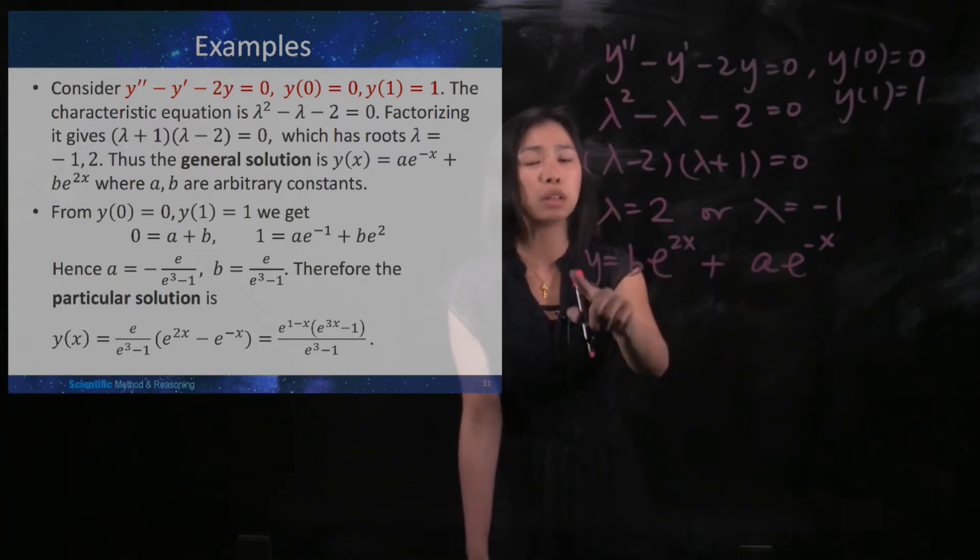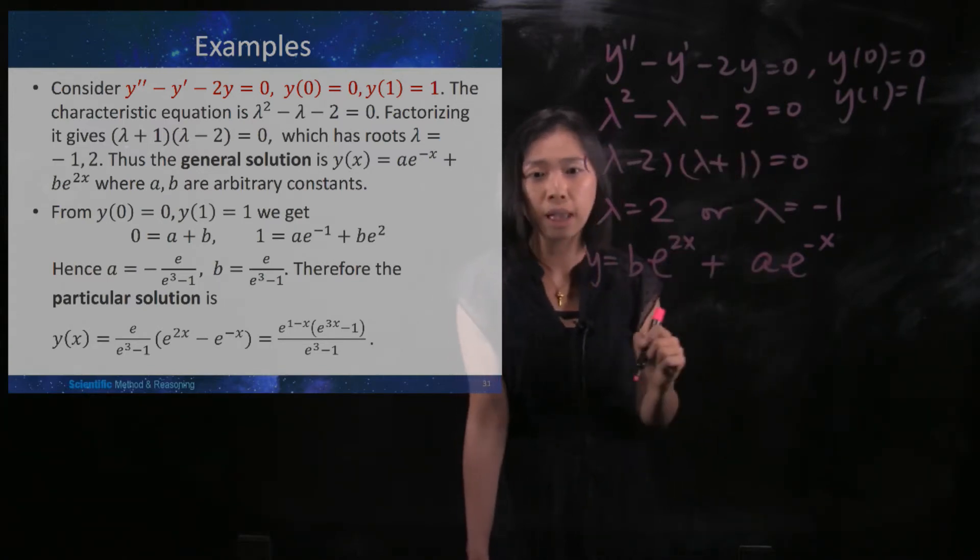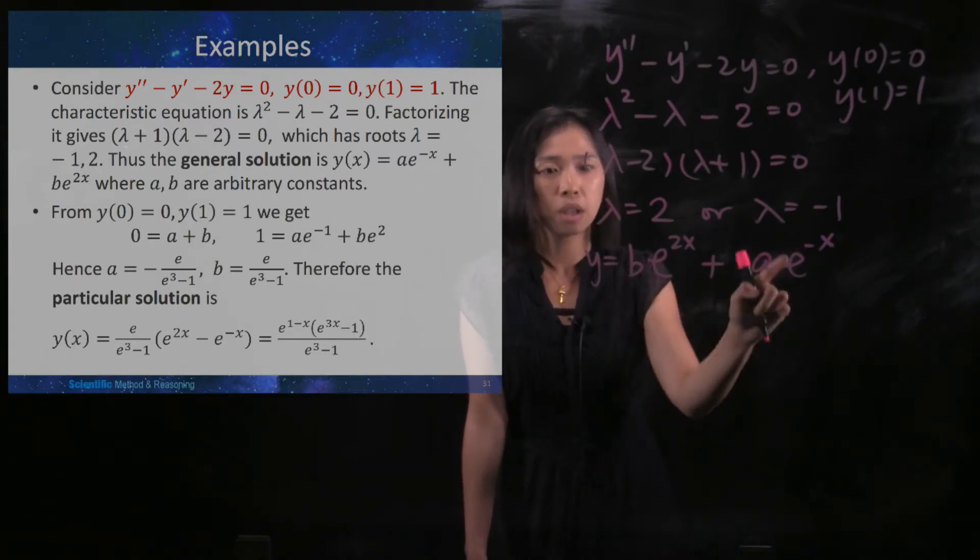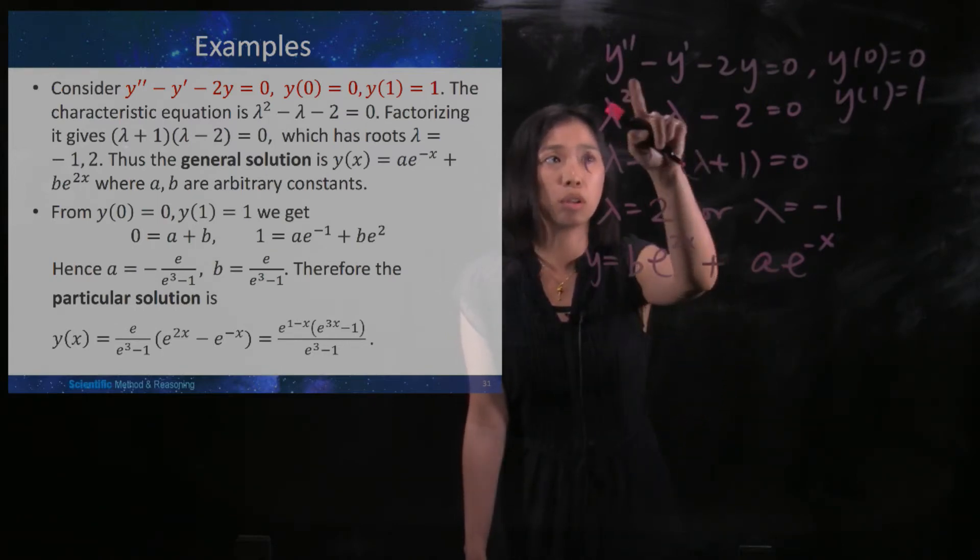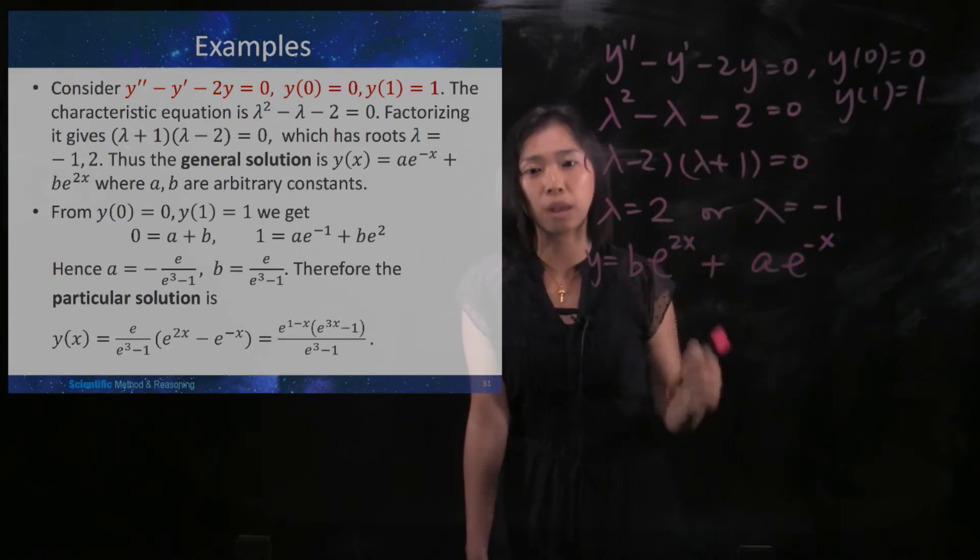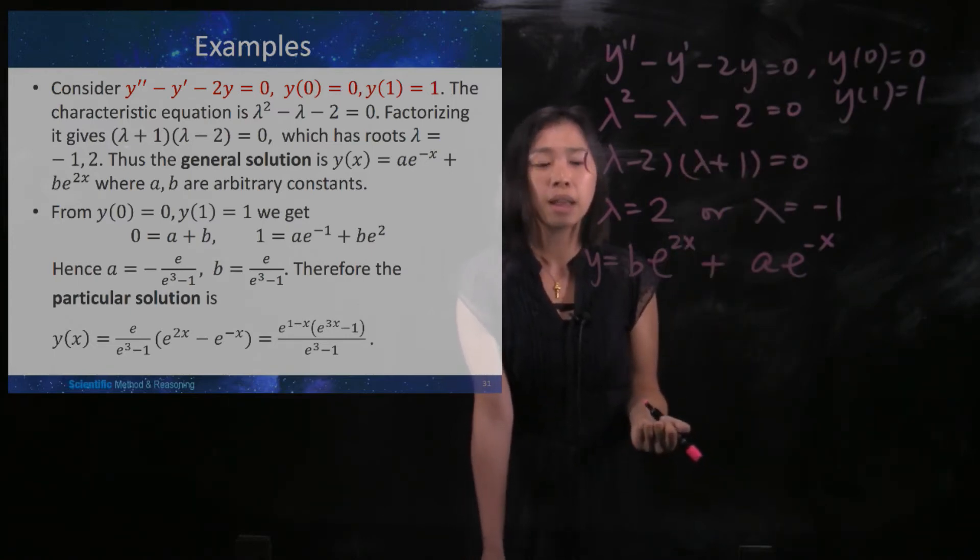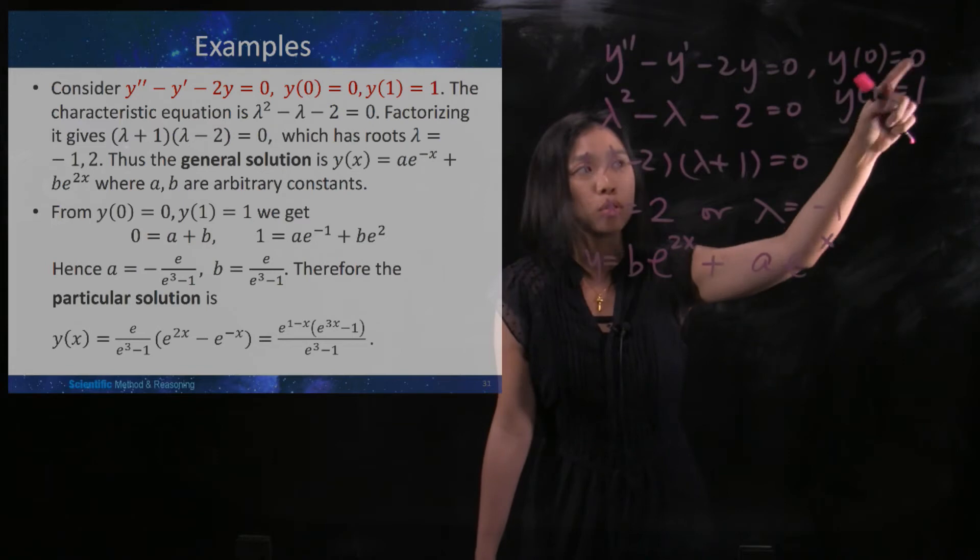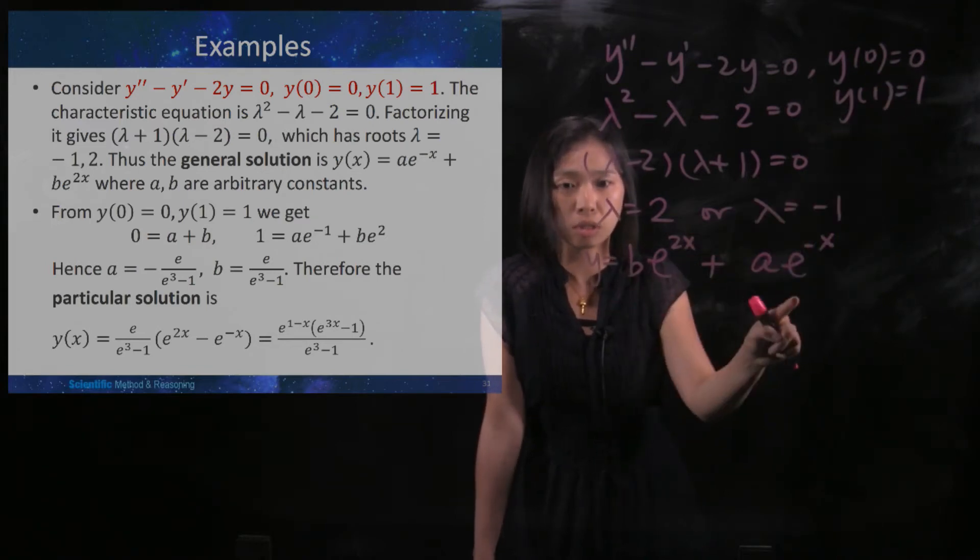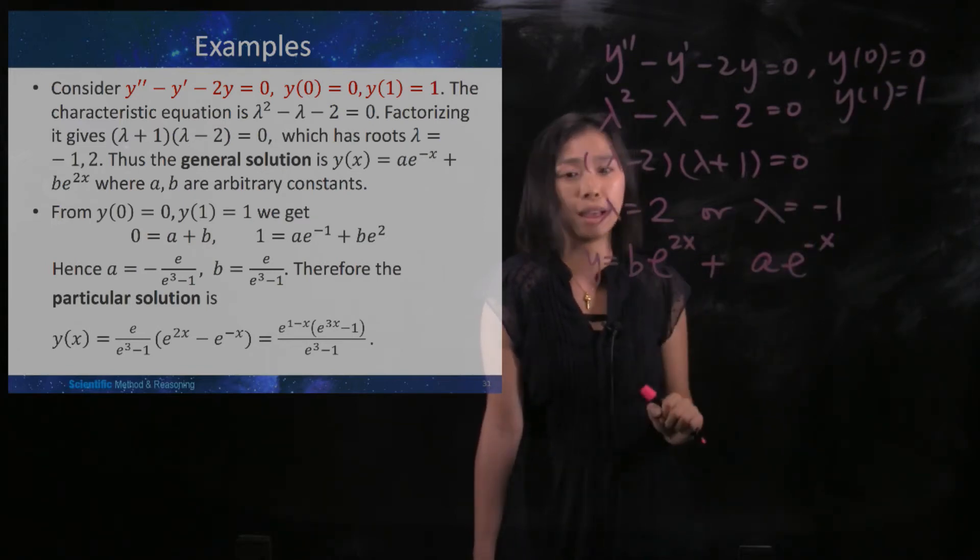Then this would be the general solution to this differential equation, meaning that when you substitute it to both sides of the equation, they would be the same. Right now what we have to do is substitute the initial condition into this y so as to find your a and your b.